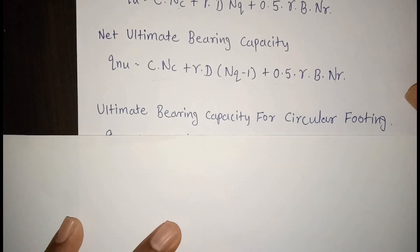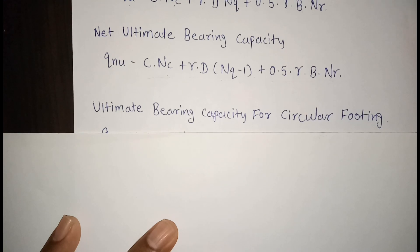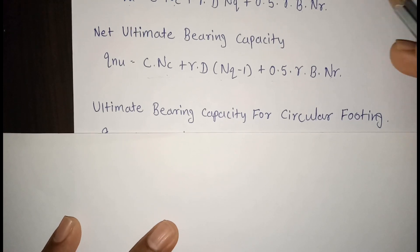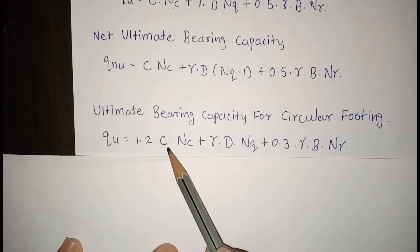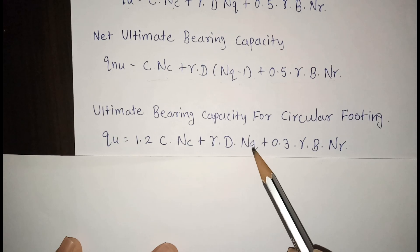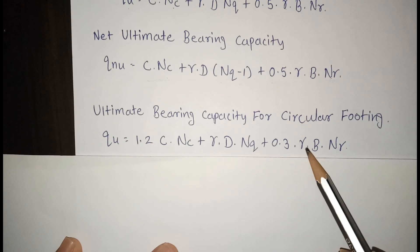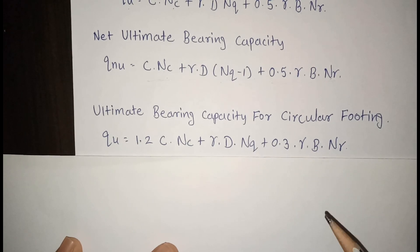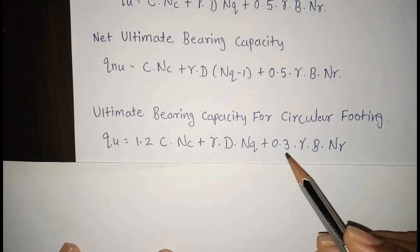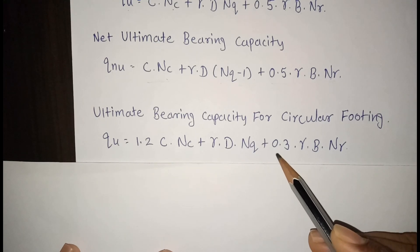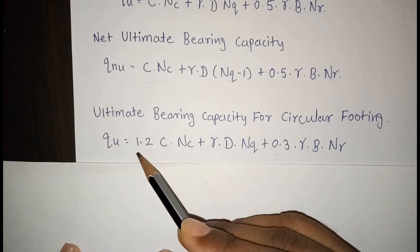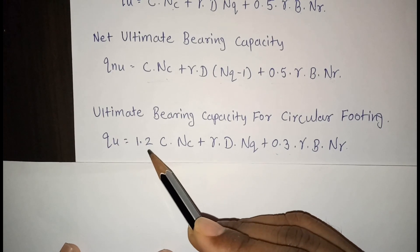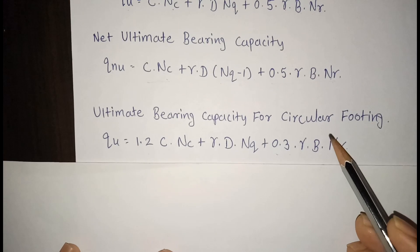Ultimate bearing capacity for circular footing: QU = 1.2CNC + γD·NQ + 0.3γB·Nγ. The only difference from the strip footing formula is that the coefficient in the first term is 1.2 and the coefficient in the third term is 0.3.